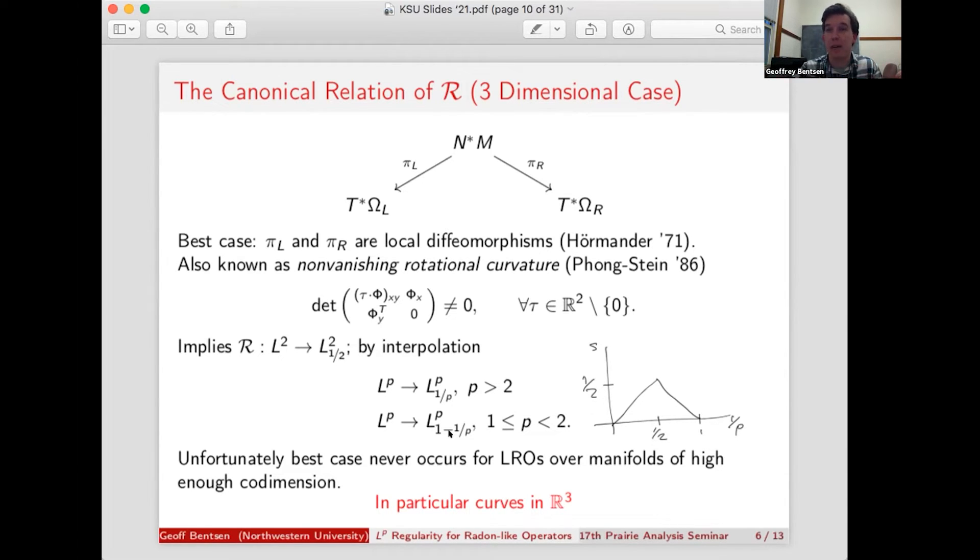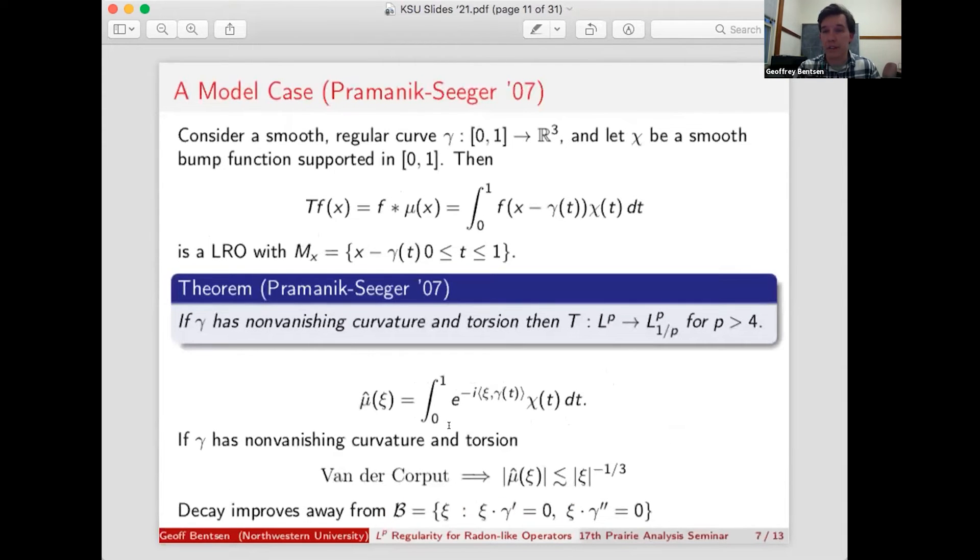So the strategy for trying to prove results for local radon-like operators, much like most of mathematics, is you start with model cases. And you then see if you can extrapolate from those and see the general structure within those cases. So the case that we're going to look at is one studied by Pramanik and Seeger back in 2007. So let's start with a smooth regular curve in R3 and let chi be a smooth bump function. Using those two, we can construct a measure mu, which is supported on gamma. And we can then construct a convolution operator, t f of x, which is just the convolution of f with that measure mu. And if we write out the integral representation of this, we get this formula here, which from here you can see pretty clearly, this is a local radon-like operator where our curves that we're integrating over are just translates of the curve gamma.